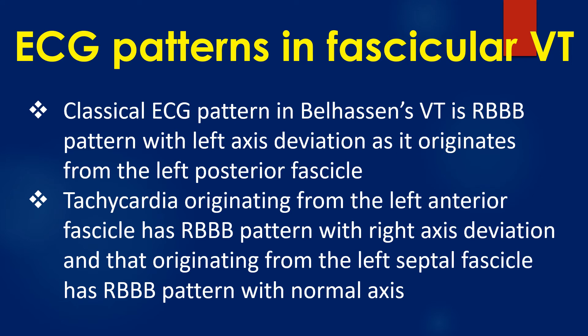The classical ECG pattern in Belhassen's VT is right bundle branch block pattern with left axis deviation, as it originates from the left posterior fascicle. Tachycardia originating from the left anterior fascicle has RBBB pattern with right axis deviation, and that originating from the left septal fascicle has RBBB pattern with normal axis.